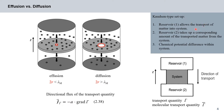The Knudsen-type setup consists of two reservoirs — reservoir 1 and reservoir 2 — and the system of interest, where diffusion or effusion takes place. Reservoir 1 continuously allows the transport of matter — in the case of particles, or any other transport such as heat — over the duration of the experiment into the system. Reservoir 2 continuously takes up a corresponding amount of the transport quantity, for example gas molecules, from the system. We work under stationary non-equilibrium states, meaning the chemical potential difference is maintained within the system.